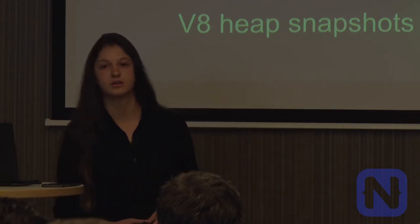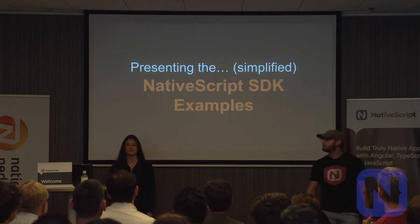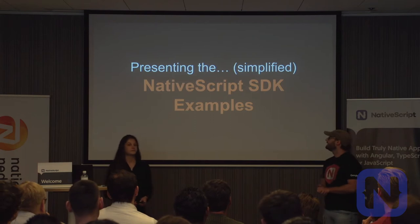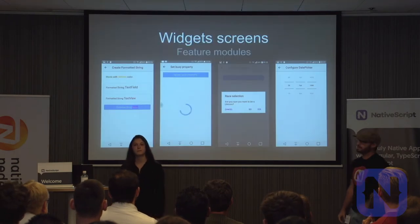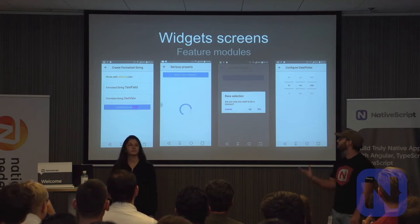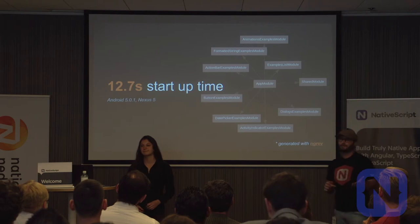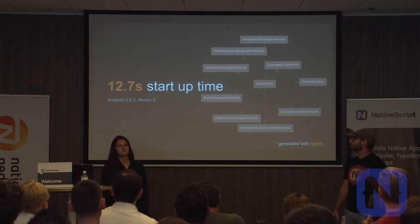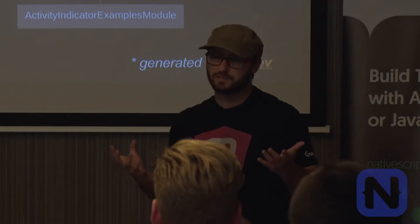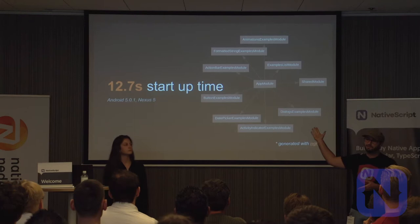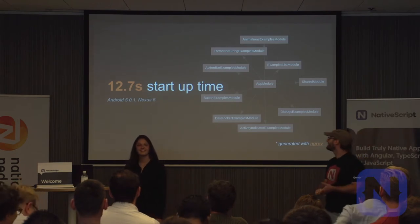Now that we know what we're going to do, let's see which app we're going to optimize. The app we're going to look into today is the simplified version of the NativeScript SDK examples. It's a screen with a bunch of examples, and when you navigate to the examples, you get a page with UI widgets built in NativeScript. Even for the simplified version, it took around 13 seconds to start up on an old Android phone — a Nexus 5. Still, 13 seconds is a lot, and remember, this is only the simplified version.